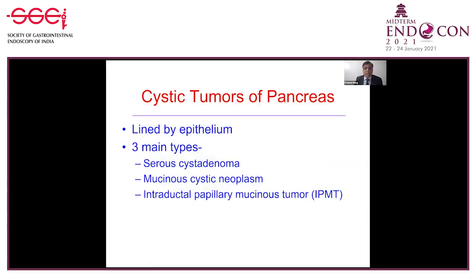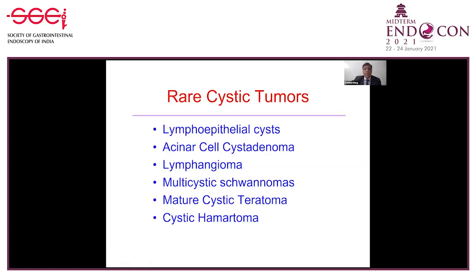The cystic tumors of the pancreas are lined by an epithelium, as opposed to a pseudocyst. There are three main types of cystic lesions I will discuss today: serous cyst adenoma, mucinous cyst neoplasms or MCN, and intraductal papillary mucinous tumor or IPMN. There are also rare cystic tumors diagnosed on histology: lymphoepithelial cyst, SNR cyst adenoma, lymphangioma, multicystic schwannomas, mature cystic teratoma, and hematoma.